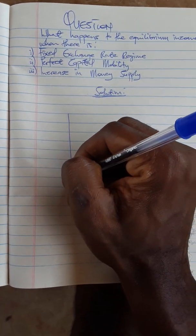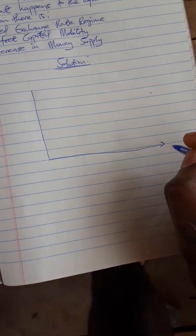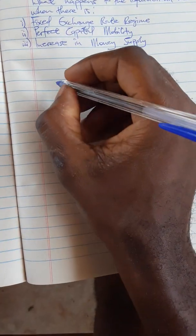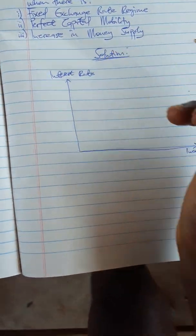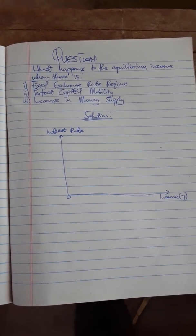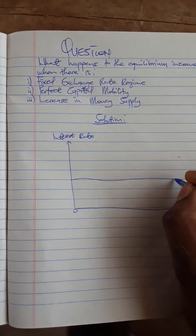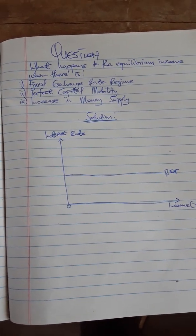We start by drawing our graph. We draw the X and Y axes. We label the Y-axis as interest rate and the X-axis as income. Since there is a fixed exchange rate regime and perfect capital mobility, the BOP curve will be horizontal. We label it BOP — balance of payment curve.